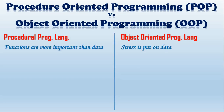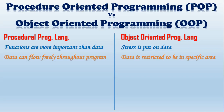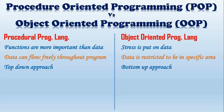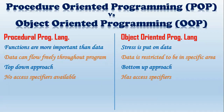Let us see the difference between procedure oriented and object oriented programming. In procedural programming, functions are more important than data, but in object oriented programming, the stress is put on data. In procedural programming, data can flow freely throughout the program, but in object oriented programming, data is restricted to the specific area where it is needed — making it more secure. Procedural programming uses a top-down approach, while object oriented programming uses a bottom-up approach. Procedural programming has no access specifiers, but object oriented programming has access specifiers, which tell whether you have access to a particular part of a program.